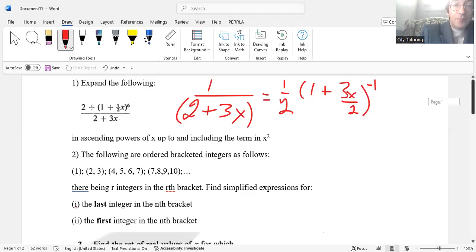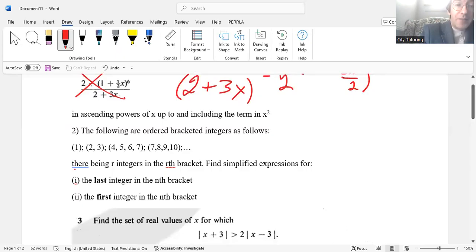Now let's look at question two. Number two says the following are ordered bracketed integers as follows. There being R integers in the Rth bracket, find simplified expression for the last integer and the first integer in the nth bracket. A lot of the candidates had no idea how to even approach this question. This only involved the summation—you had to do 1 + 2 + 3 up until N. By the way, this video is for students who are more advanced in mathematics. If you have not taken pure mathematics or more advanced courses, none of this is going to make sense to you, but I'm assuming a certain level.